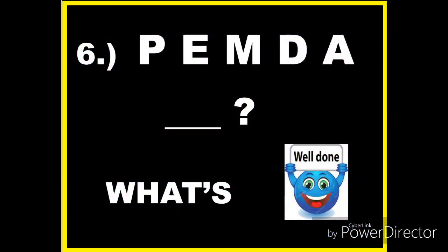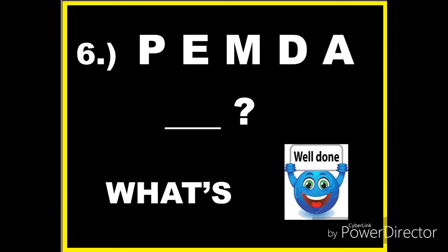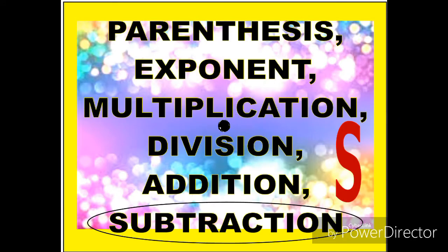Let's observe number six. We have P, E, M, D, A — PEMDA. What's next? The clue is these are mathematics terms. P stands for parentheses, E for exponent, M for multiplication, D for division, A for addition. Therefore the next term is S, which stands for subtraction.